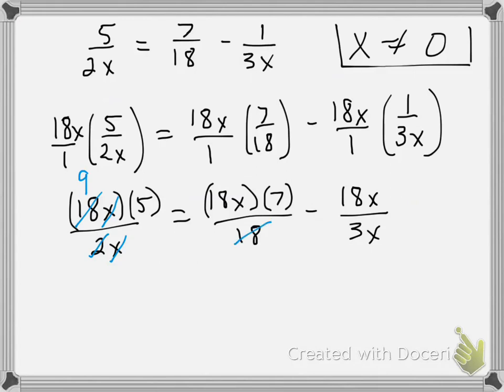In our second term, the 18 cancels, and in our last term, the x cancels, and the 3 goes into 18 6 times. And so now I can write 9 times 5, which is 45, equals 7x minus 6. And now I have a rather easy equation to solve.